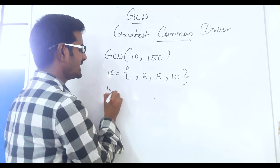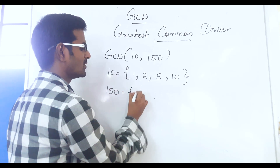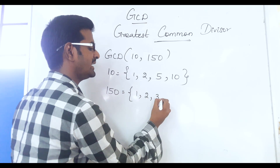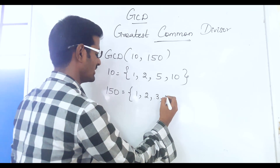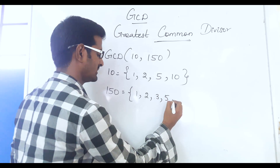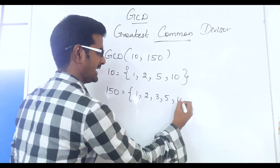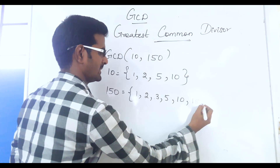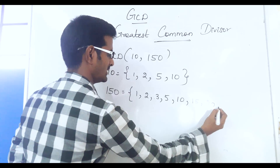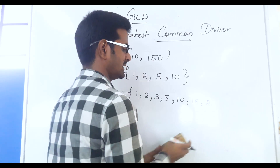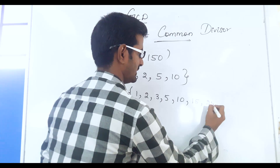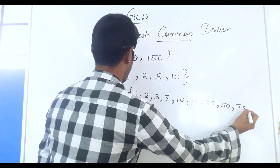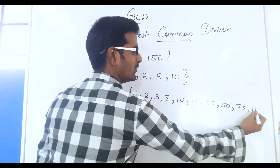For 150, the divisors are: 1, 2, 3, 5, 10, 15, 25, 50, 75, and 150.